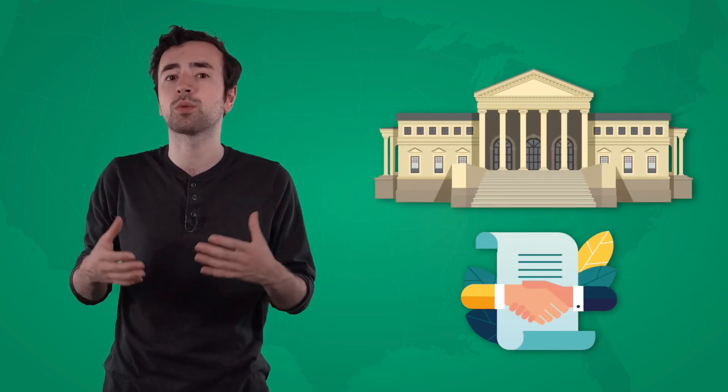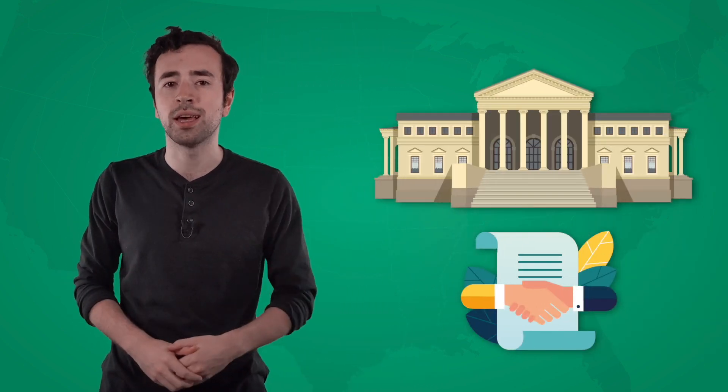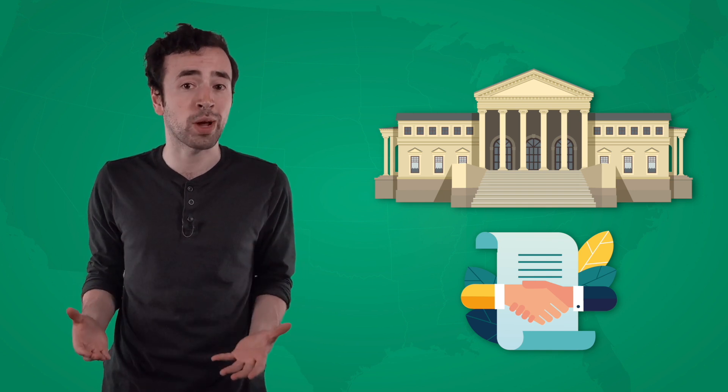The founders included references to natural rights and the social contract in the Declaration of Independence and the Constitution. In the Declaration, they essentially argued that it was a government's responsibility to honor the social contract by protecting people's natural rights, and if it chose not to, then it was the people's responsibility to break the contract and change the government. The Constitution and the Bill of Rights took the next step in expressing what rights people were entitled to in exchange for pledging allegiance to the new U.S. government.